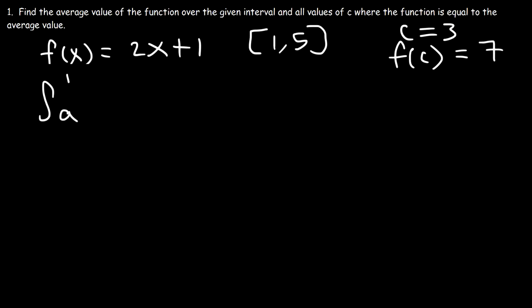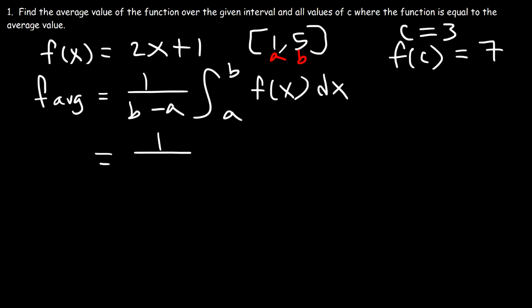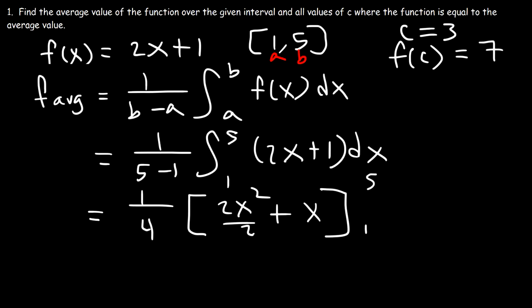Let's start with the formula. The average value is 1 over b minus a times the definite integral from a to b of f of x dx. We know a is 1 and b is 5, so this is 1 over 5 minus 1, times the integral from 1 to 5 of 2x plus 1 dx. 5 minus 1 is 4. The antiderivative of 2x is 2x squared over 2, and for 1 it's x, evaluated from 1 to 5.